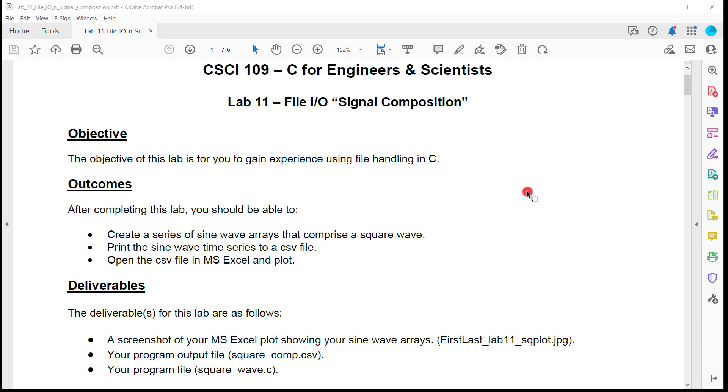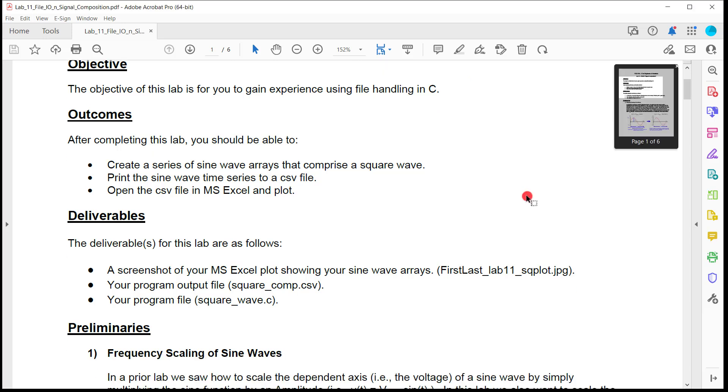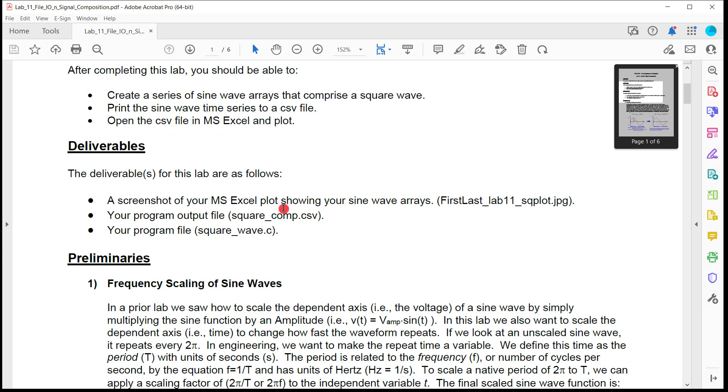The objective of this lab is for you to gain more experience using files, and we're going to do a massive time series, which is really cool. What we're going to do is create sine wave arrays and add them together to make a square wave. Then we're going to dump that to a CSV file, bring it over into Windows, open it with Excel, and plot it so you can see everything come together.